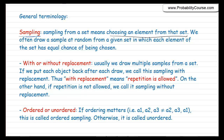We usually draw samples at random from a set. Sampling could be with or without replacement. When I sample without replacement, it means that if I pick an element from the set, I don't put it back. So repetition is not allowed. When I sample with replacement, I pick an element but put it back, so I might choose the same element twice. In summary: with replacement means repetition is allowed; without replacement means repetition is not allowed.